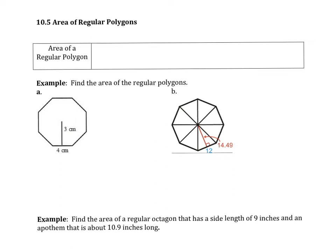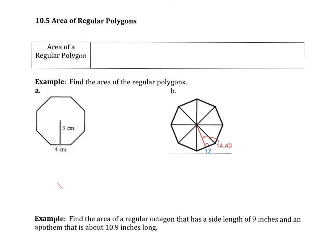Alright, here are the last notes for chapter 10. This is 10.5, area of regular polygons. First I will give you a formula, but I just want to make sure I note that a regular polygon is a polygon that has congruent sides and congruent angles.